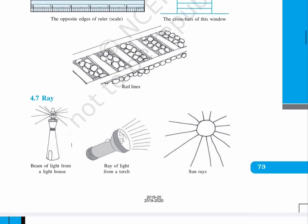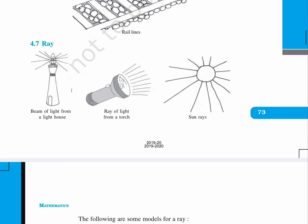We have three figures here. First one, beam of light from a lighthouse. Second, ray of light from a torch. Third, sun rays. Page 74. The following are some models of a ray.